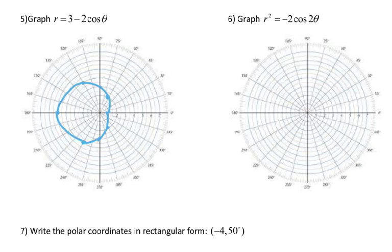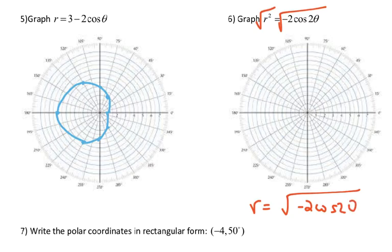In order to graph number 6, remember, it says r squared. So we're going to square root both sides. So we're going to graph r is equal to the square root of negative 2 cosine 2 theta. So I'm going to plug that in my calculator. And when you go to the table, you'll notice that there's no value at 0, 15, 30 degrees because they're all errors. The first point is at 45 degrees zero.